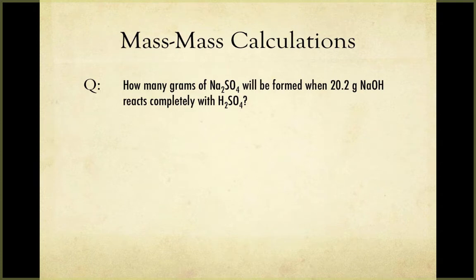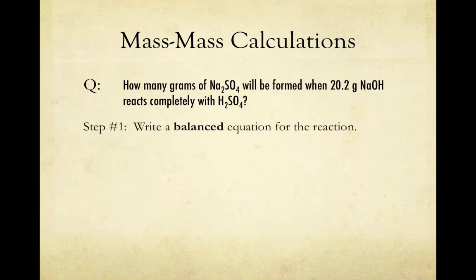Take this problem for example. Here we're asked how many grams of Na2SO4 will be formed when 20.2 grams of NaOH react completely with H2SO4. Here we're being given that we have 20.2 grams of NaOH and plenty of H2SO4, so the H2SO4 won't actually affect our calculations. And we're being asked how many grams of sodium sulfate we can form with that much sodium hydroxide. In order to figure out how much product we can make from a given amount of reactant, we first have to know what our mole ratio is between our reactants and products. Therefore, step one will be to write a balanced equation.